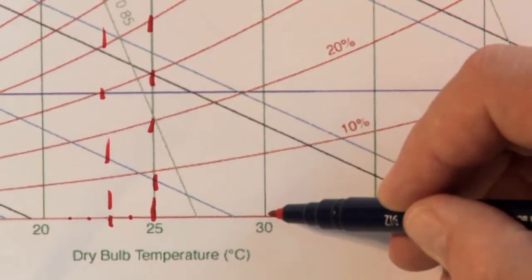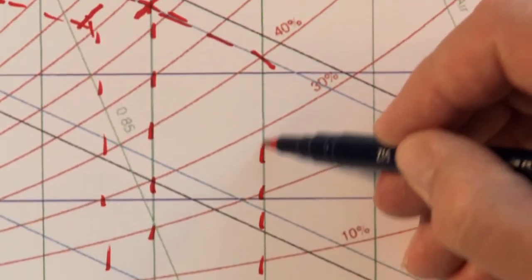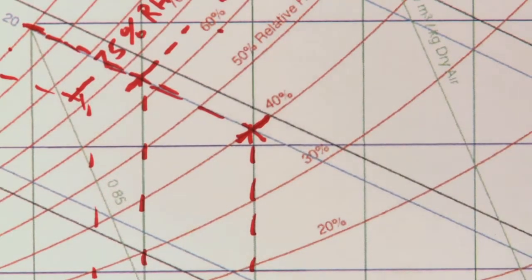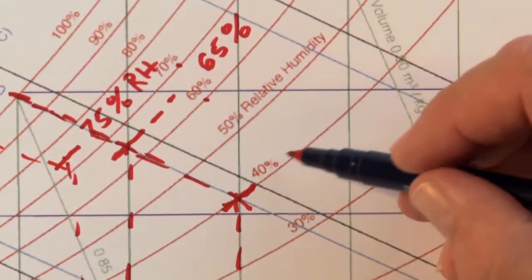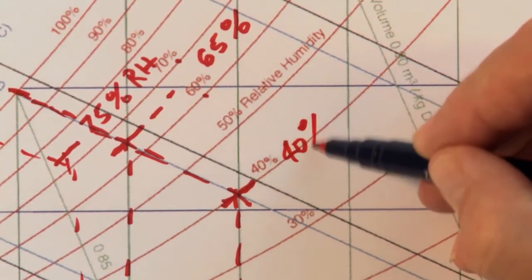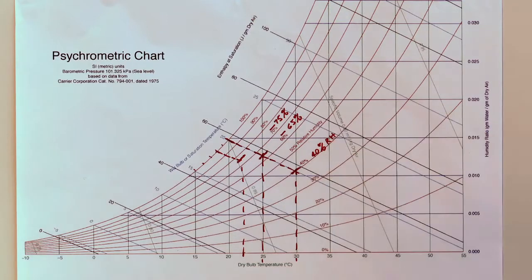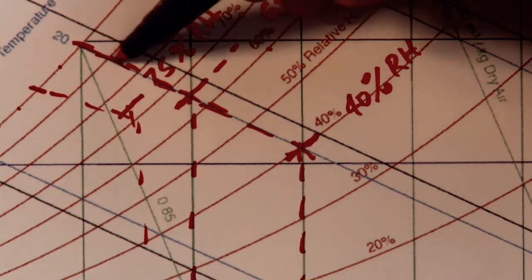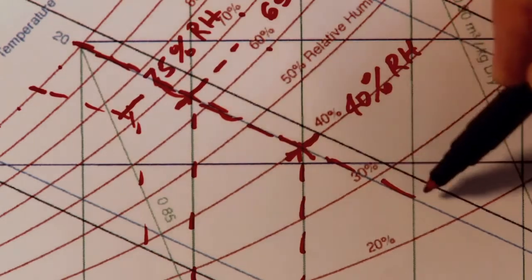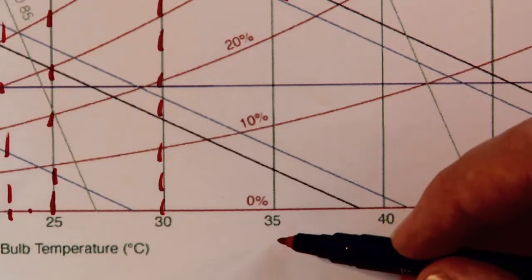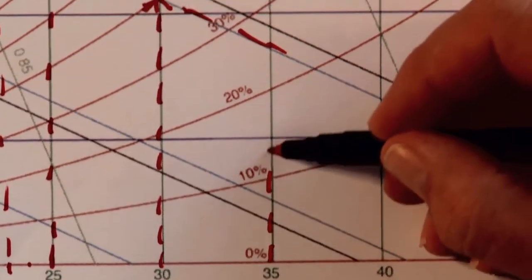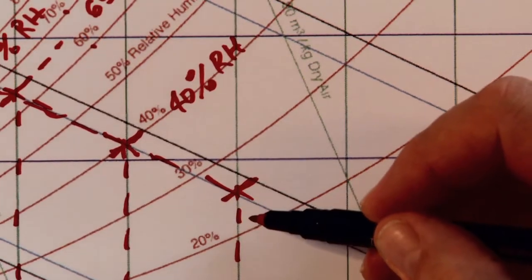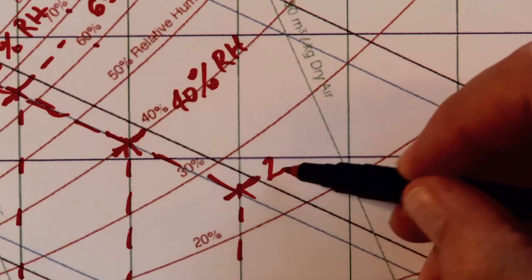Here we have 30 degrees Celsius plotted on this curve, and the intersection of these two points tells us the relative humidity — in this case a reading of 40%. One more example: with a wet bulb of 20 degrees Celsius and a dry bulb of 35 degrees Celsius, the intersection of these two points gives us a relative humidity of 25%.